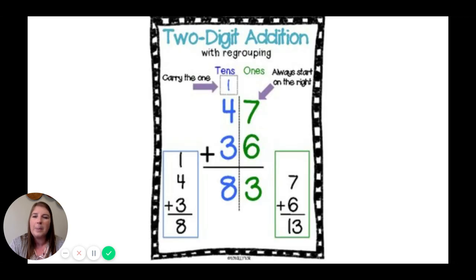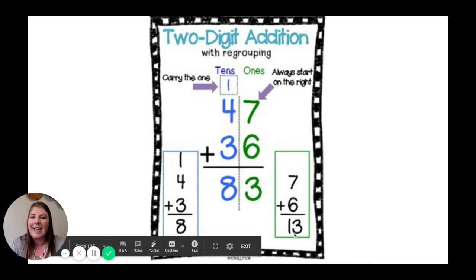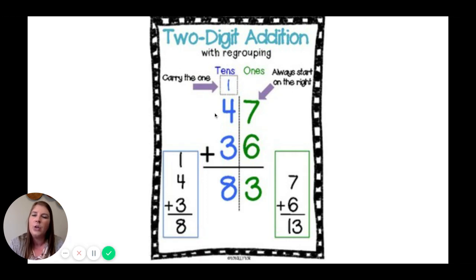Now some of the problems we'll need to regroup. So when we're using the standard algorithm, again, we start in the ones place. 7 plus 6 equals 13. The number 13 has a 1 in the tens place. So we need to put that up in the tens place. We need to regroup and carry the 1. So now when we add our tens, we have 1 plus 4 equals 5. 5 plus 3 equals 8.